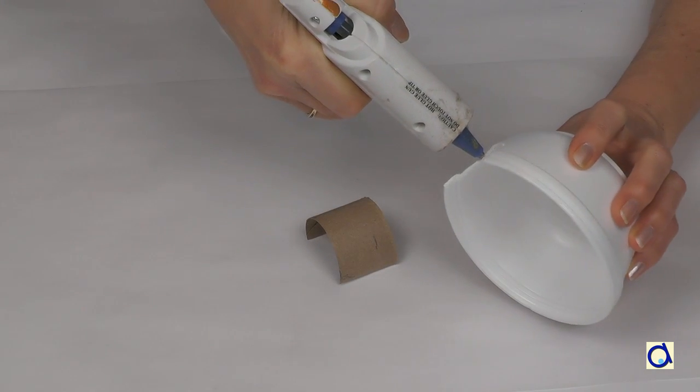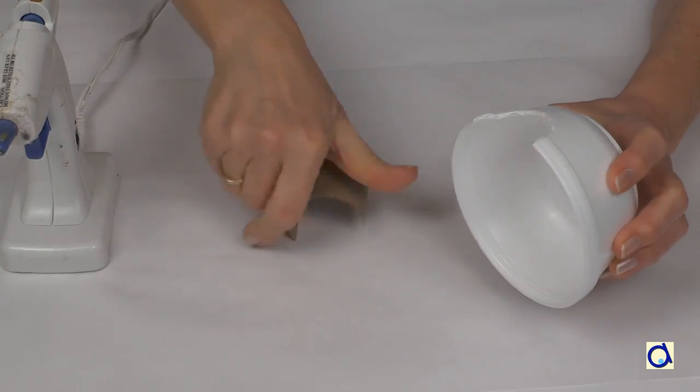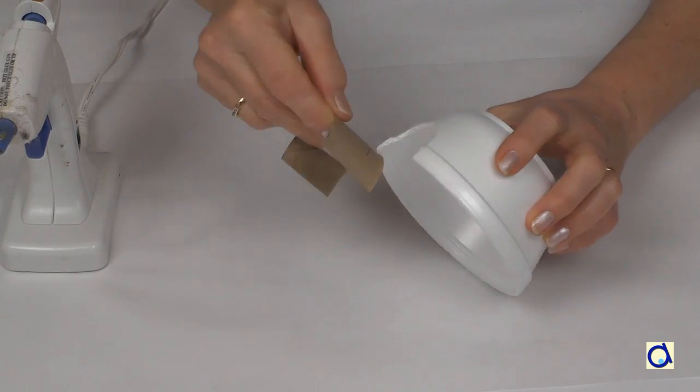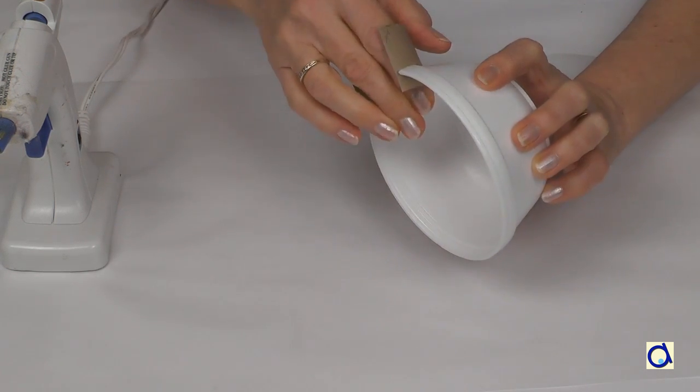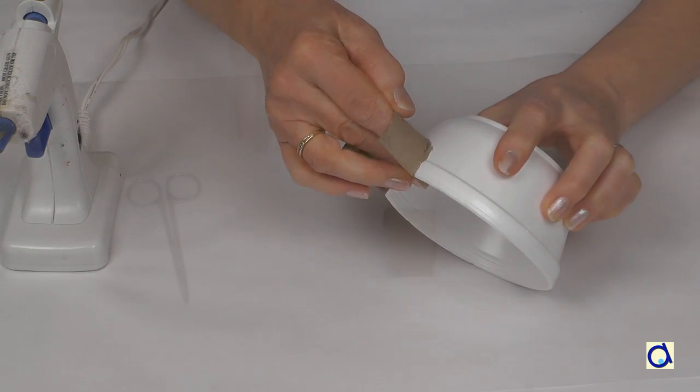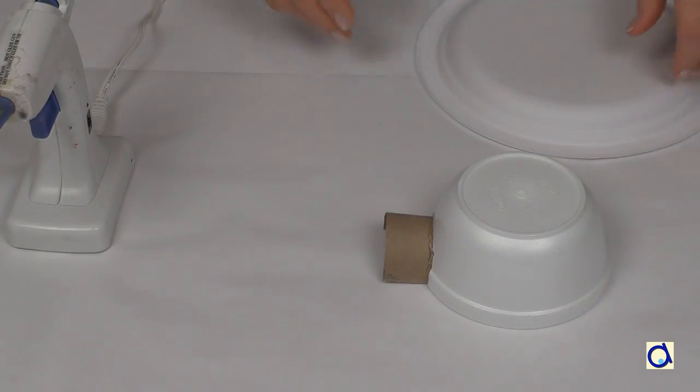Glue the piece of tube in the arch you created in the ball. I glued the tube with the glue gun to go faster. If you glue the half tube with white glue, let the glue dry. You now have the structure of the igloo.